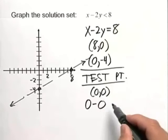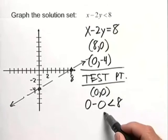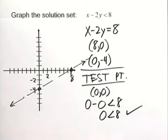And from this we have 0 minus 0 which is less than 8. 0 is less than 8. That's certainly a true statement.